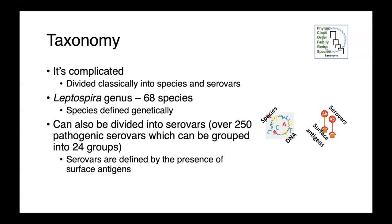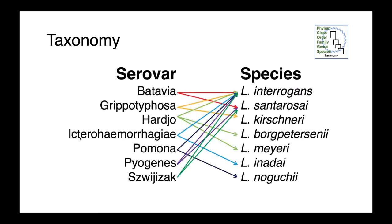The taxonomy of Leptospira is quite complicated. We divide it into both species and serovars. Within the genus Leptospira, there are 68 species defined genetically based on DNA sequence and phylogenetic relationships. Serovars, on the other hand, are defined based on the presence of surface antigens — essentially how the immune system sees these organisms. Serovar to species is not a one-to-one relationship: one serovar such as Grippotyphosa can be found within multiple bacterial species, including Leptospira interrogans and Kirschneri.